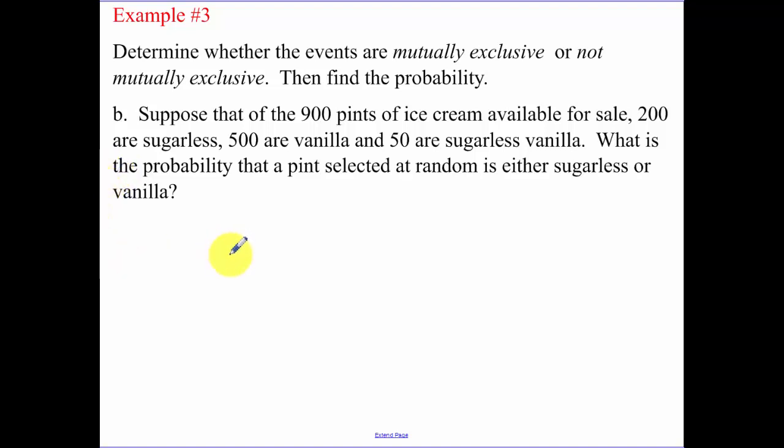Determine whether the events are mutually exclusive or not mutually exclusive, then find the probability. We have 900 pints of ice cream available. 200 are sugarless. 500 are vanilla. And 50 are sugarless vanilla. What is the probability that a pint selected at random is either sugarless or vanilla? Since they've stated that there is such a thing as sugarless vanilla, these are not mutually exclusive.